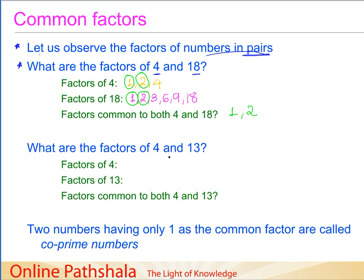Now I want you to take a special case. Let us say we have taken number 4 and number 13, and we write down the factors of both. The factors of number 4 are 1, 2, and 4. And for 13 — if you remember, 13 is a prime number, so the only factors that 13 will have are 1 and 13 itself. So what are the factors common to both 4 and 13? We have 1 here and 1 here. Do we have any other common factor? No. The only factor common to both 4 and 13 is simply the number 1.